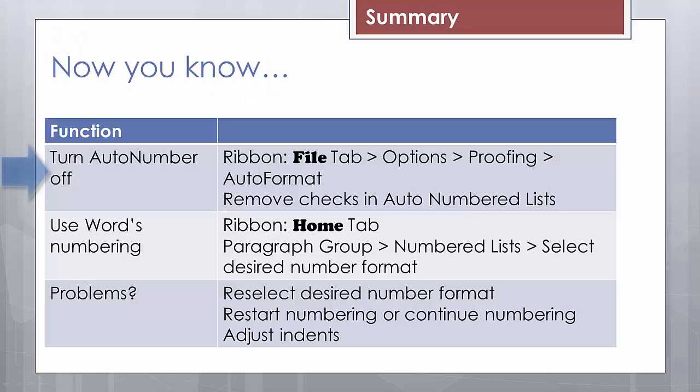Now you know how to turn the auto-numbering as you type on and off. You know how to use Word's numbering system. And then you also have some ideas on how to handle any problems, where you can reselect the desired format if it doesn't look like what you wanted it to do. You can restart the numbering or continue the numbering, and you may need to adjust the indents. But now it should make it a whole lot easier for you to create outlines.